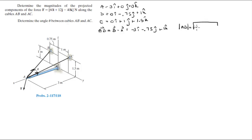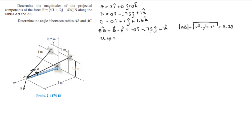Now we need to find the magnitude of AB. To find the magnitude, you take the square root of the x-component squared plus the y-component squared plus the z-component squared — so this squared plus this squared plus this squared — and this gives 3.25.